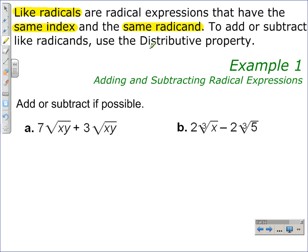You can use the distributive property to add and subtract like radicands. Let's look at this first example where the directions are to add or subtract if possible. We should recognize here that the index is 2 and the radicand is the same, XY, so we can use the distributive property.